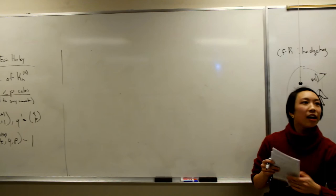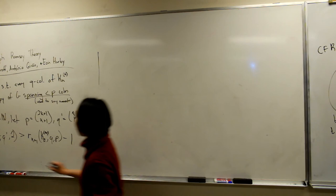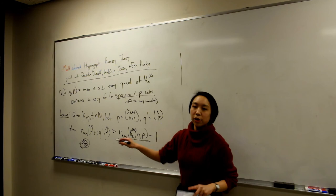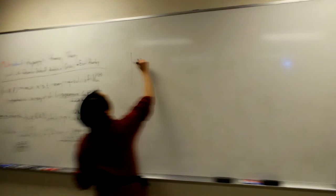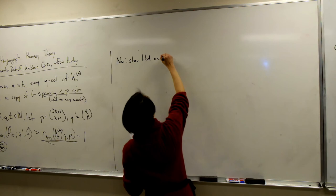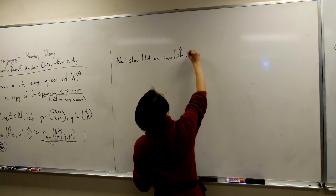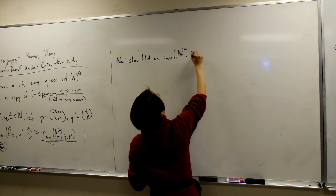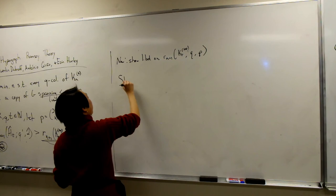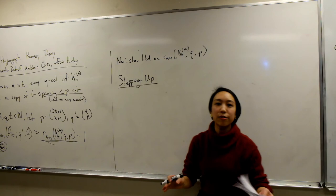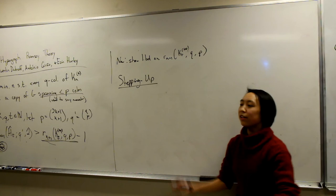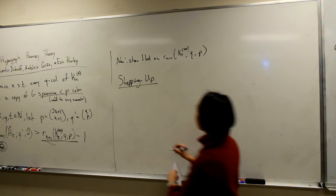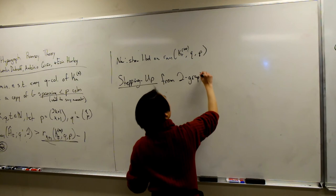If you believe that lemma, what's left is to show lower bounds on the clique Ramsey number R_{K+1}(K_T, Q, P). Now I'm back in clique world and can prove stepping up lemmas. Let me explain stepping up from graphs (2-uniform) to 3-uniform hypergraphs to build intuition.